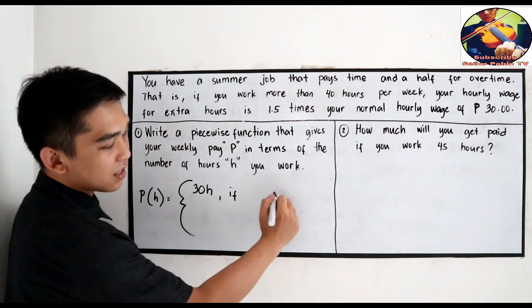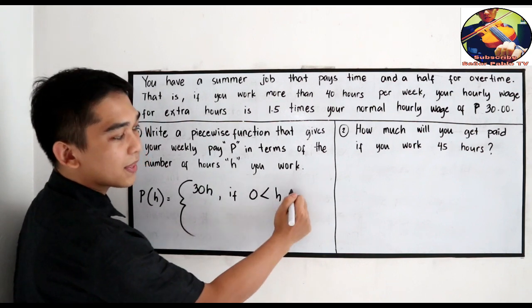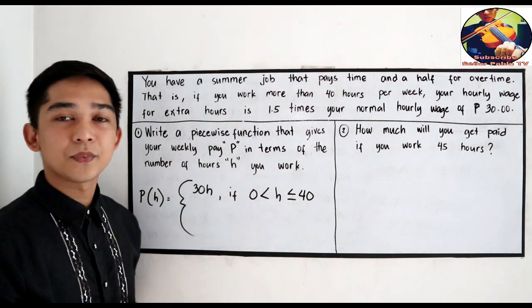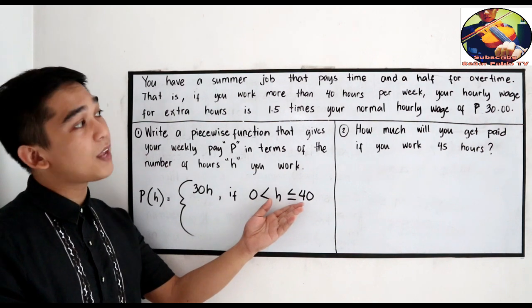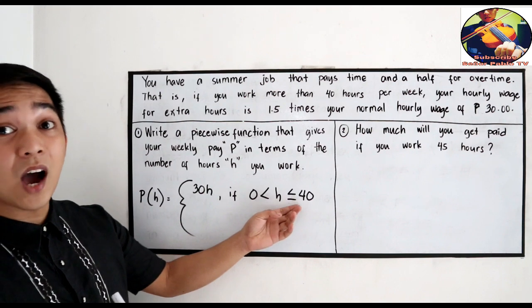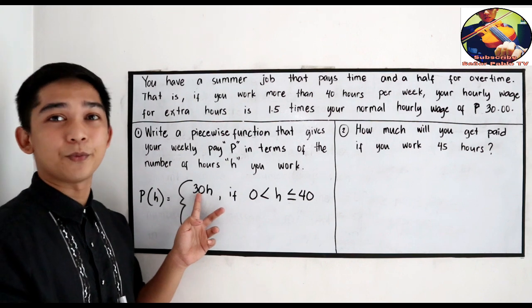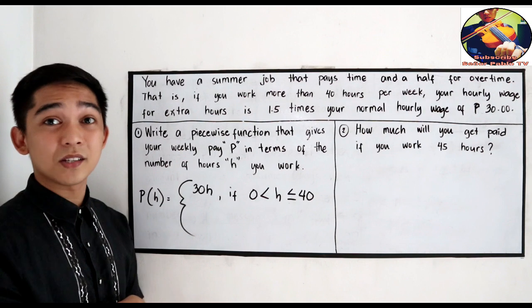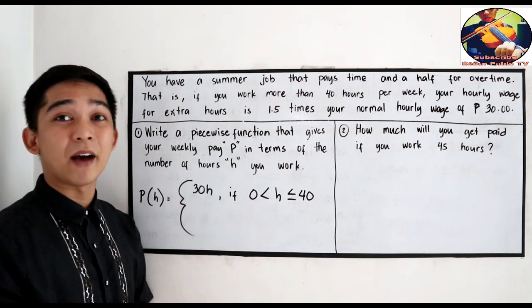If the hours is greater than zero but less than or equal to 40 hours. Let's say you worked 20 hours in one week, 20 hours. So 20 times 30, that's what you'll be paid. If you worked only 5 hours in one week, so 30 times 5, that will be your pay.